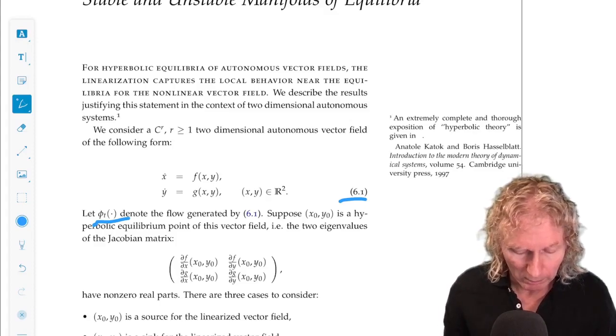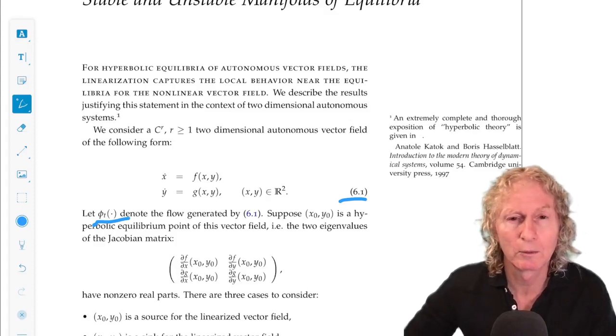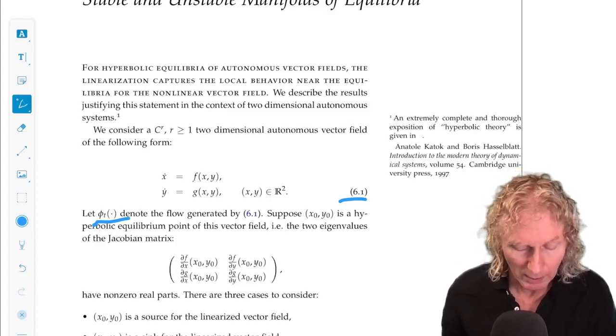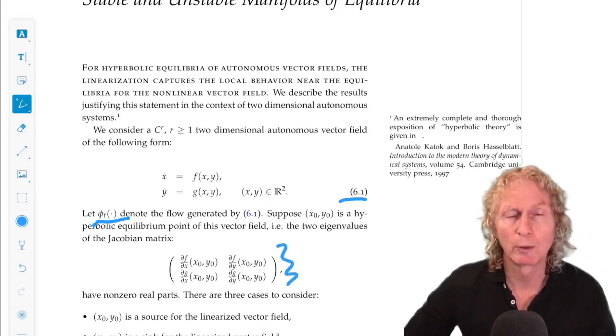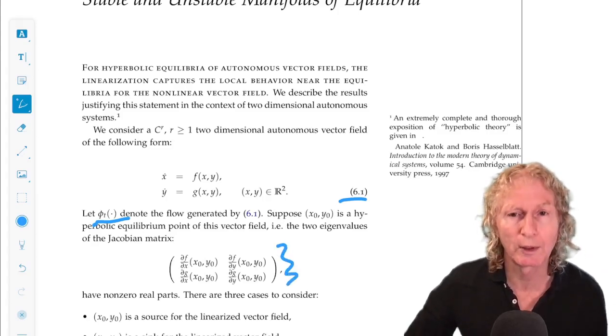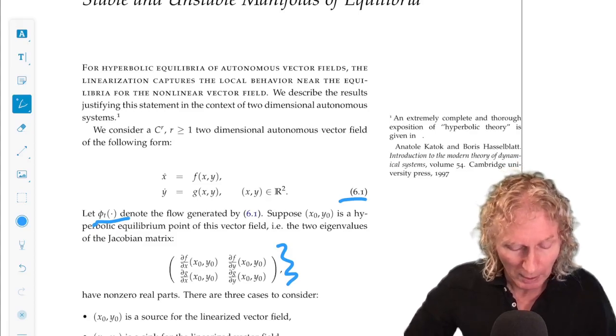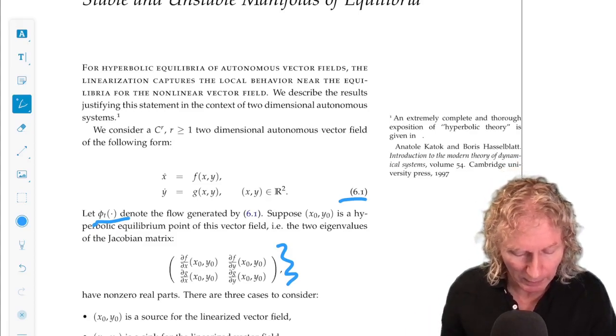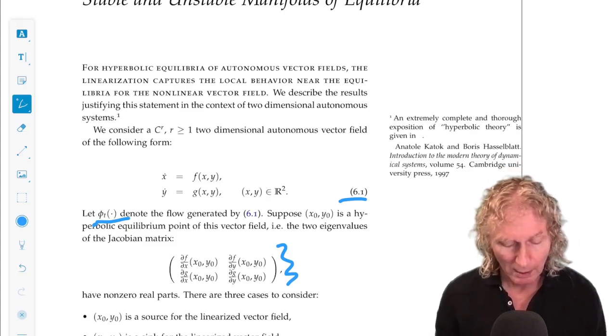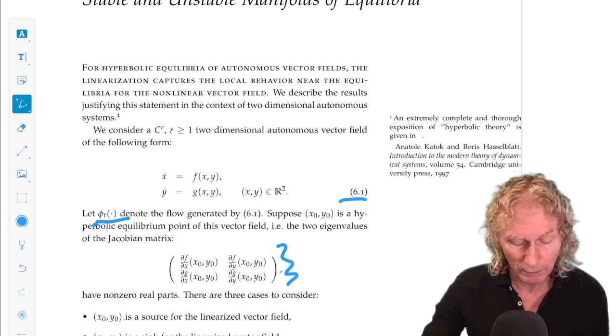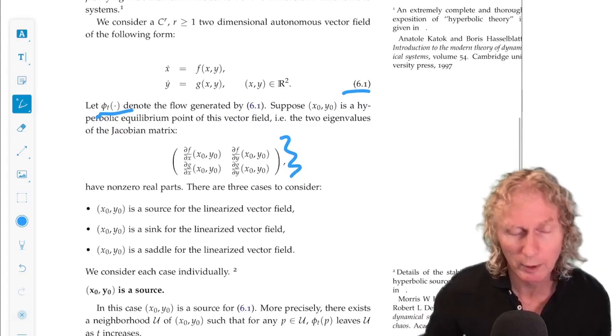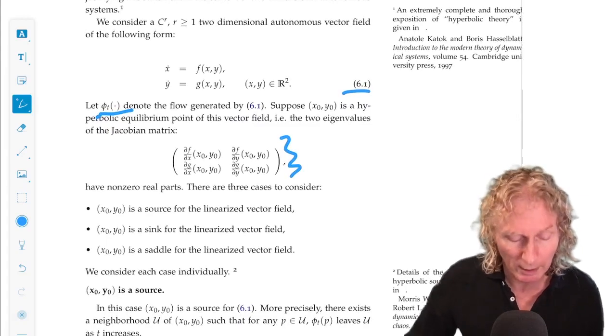Now, we're going to suppose (x_0, y_0) is an equilibrium point and the Jacobian of the vector field at that equilibrium point. So, the matrix associated with the linearization of the vector field at the equilibrium point is given by this expression. And if the equilibrium point is hyperbolic, there are three cases to consider.